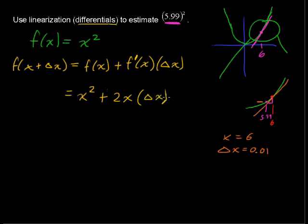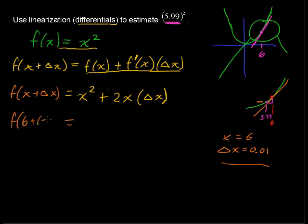Okay, so I've just done this for this specific function. Now what we're going to do is plug the numbers in. So f of x plus delta x, now we have f of 6 plus negative 0.01, right? Our delta x is negative 0.01. I've got to put negative over here, negative 0.01.